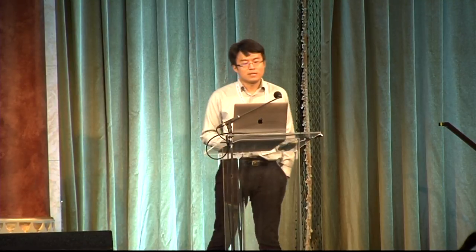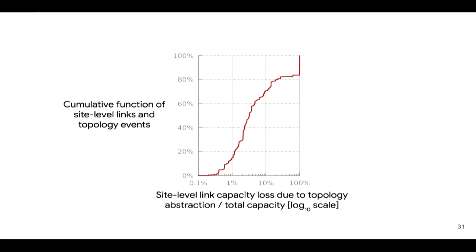This heuristic is also quite scalable, as we can parallelize TSG computation for each site-level link in parallel. We find that this heuristic effectively reduces the capacity loss due to topology abstraction: with side links and TSG, the median loss is reduced from 2% to 0.6%, while the tail case where we had 100% loss can also be considerably mitigated.